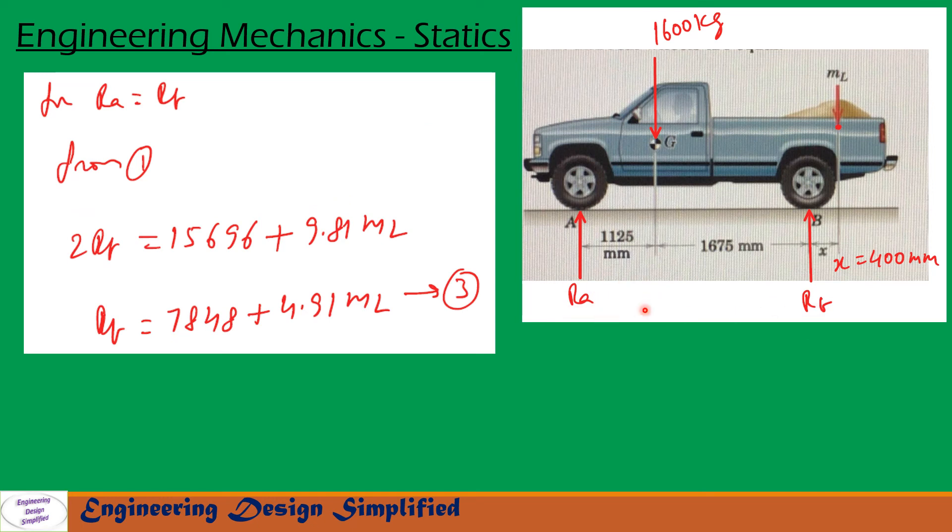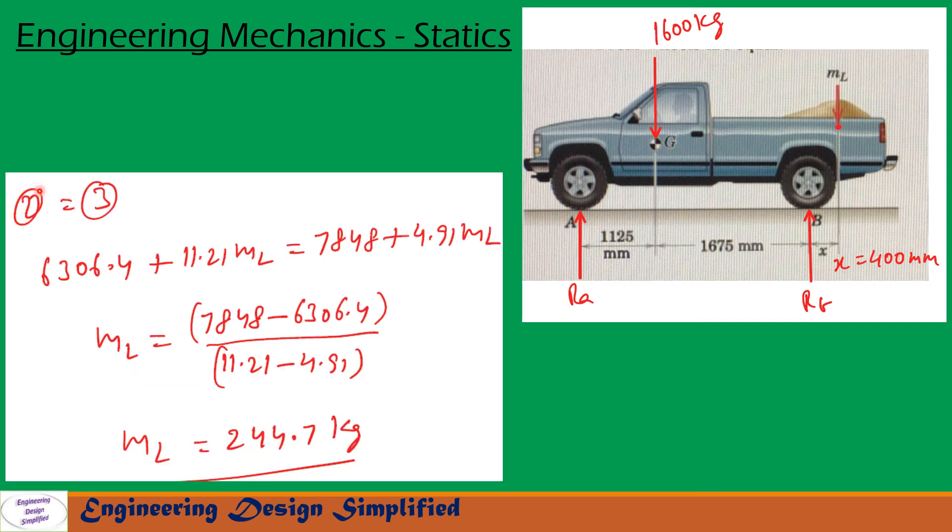For RA equal to RB, the equation 1 will become 2RB equal to 15696 plus 9.81 ML. So from this we can write RB equal to 7848 plus 4.91 into ML. Let us call this equation 3. Now let us equate equation 2 and 3. So we will get 6306.4 plus 11.21 into ML equal to 7848 plus 4.91 ML. So from this we can write ML equal to 7848 minus 6306.4 by 11.21 minus 4.91. So finally this mass ML is equal to 244.7 kg.